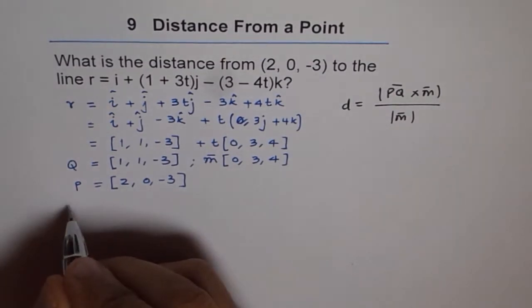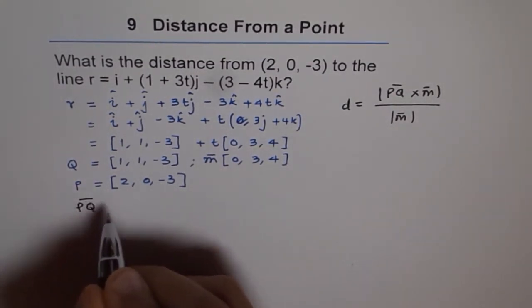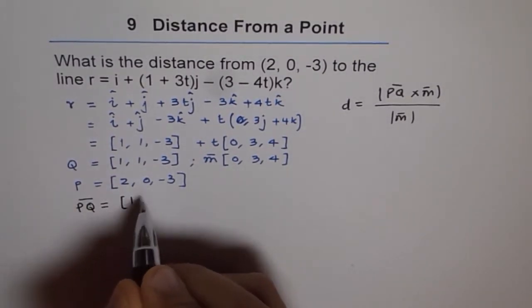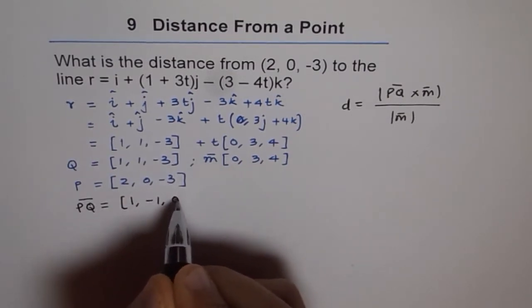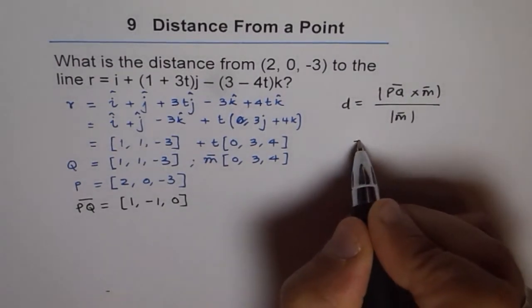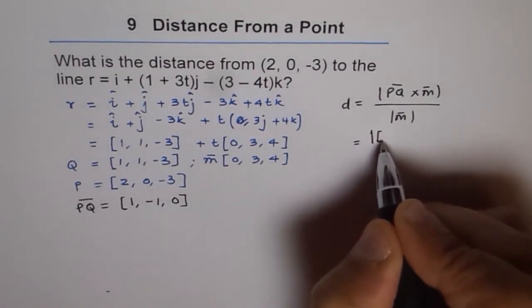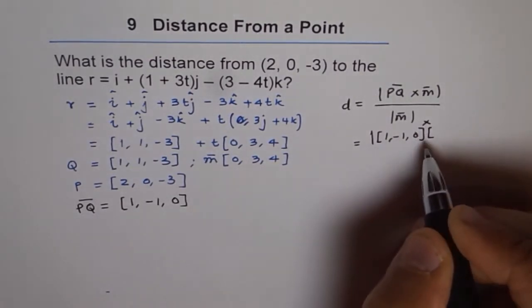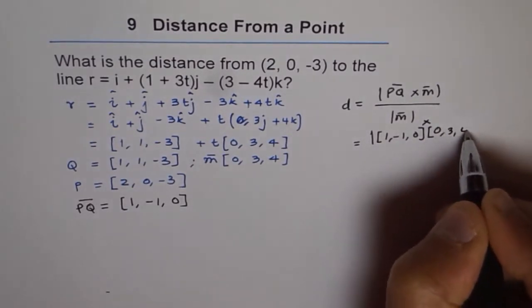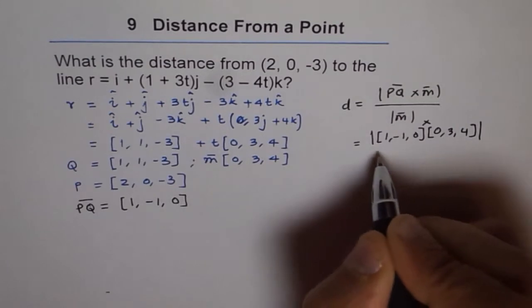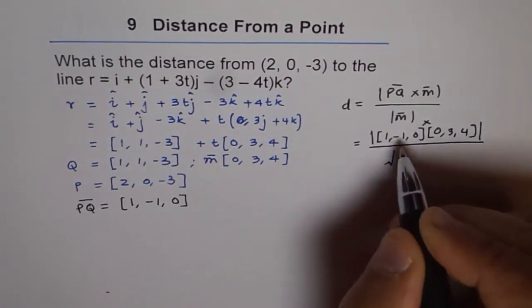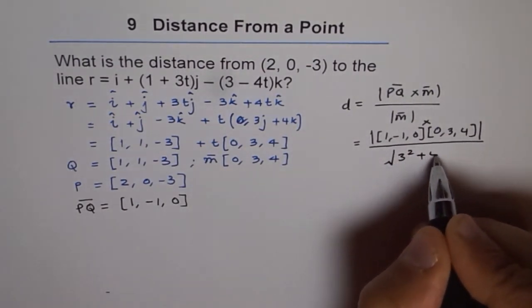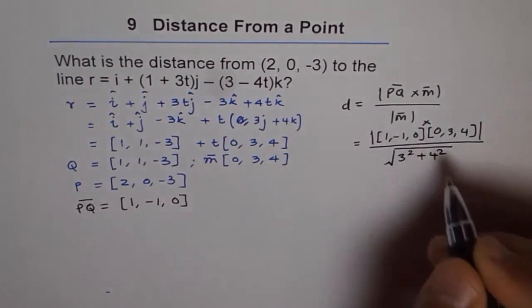what is PQ for us? So we have PQ as equal to this minus this, we can write PQ as (2 - 1 = 1, 0 - 1 = -1, 0). That is PQ. So PQ cross m will be (1, -1, 0) cross (0, 3, 4). That's the cross product between the two, and the magnitude of m, which is 0² + 3² + 4². So we'll write 3² + 4² for the time being. So that becomes the distance.